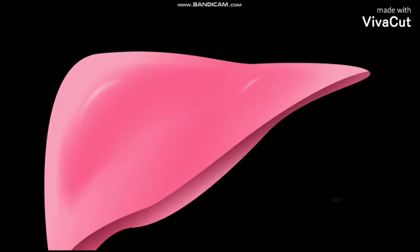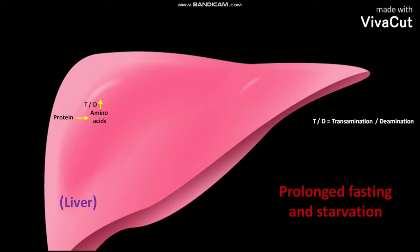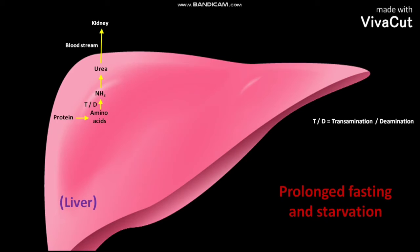In response to prolonged fasting and starvation, certain proteins present in an organism's liver are degraded to amino acids. Their non-essential amino acids undergo transamination or deamination to form ammonia (NH3). The ammonia is converted to urea, which then goes to the kidney via the bloodstream. From the kidney, the urea is excreted out with urine.